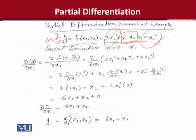अब यहाँ पर इसका सबसे पहला derivative x1 के लिहाज से होगा, और intuitively आप guess कर सकते हैं, दूसरा derivative x2 के लिहाज से होगा. f is showing the function of x1 and x2, और derivative हम calculate कर रहे हैं x1 के लिहाज से. आपने देखा होगा, x2 पर मैंने एक bar लगाया है — bar का मतलब यह है कि यह constant treat किया जा रहा है. यह principle है partial differentiation का: जब हम एक variable के लिहाज से partial derivative find out कर रहे हैं, तो बाकी सारे variables वक्ती तौर पर constant treat किए जाएंगे.